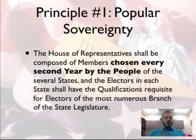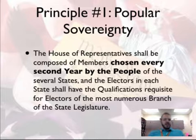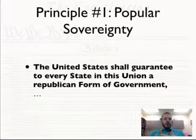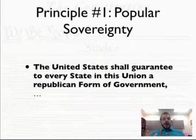We see popular sovereignty in Article 1 of the Constitution, in that the House of Representatives is chosen by the people. We also see it in Article 4, which says that every state will have a republican — meaning representative — form of government.